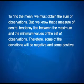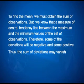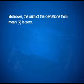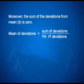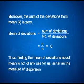To find the mean, we must obtain the sum of observations. However, a measure of central tendency lies between the maximum and minimum values of the set of observations. Therefore, the sum of the deviations will have negative and positive parts. Thus, the sum of deviations from mean x̄ is 0. That is, the mean of deviations = sum of deviations / number of deviations = 0/n = 0. Thus, finding the mean of deviations about the mean is not useful.